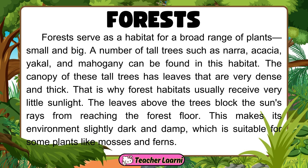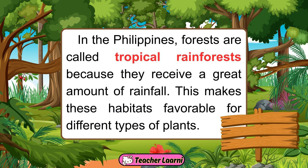The canopy of these tall trees has leaves that are very dense and thick. That is why forest habitats usually receive very little sunlight. The leaves above the trees block the sun's rays from reaching the forest floor, making its environment slightly dark and damp, which is suitable for some plants like mosses and ferns. In the Philippines, forests are called tropical rainforests because they receive a great amount of rainfall, making these habitats favorable for different types of plants.